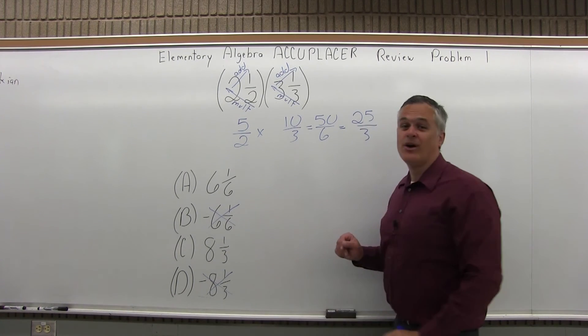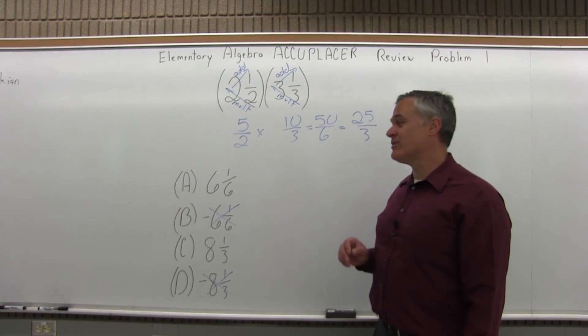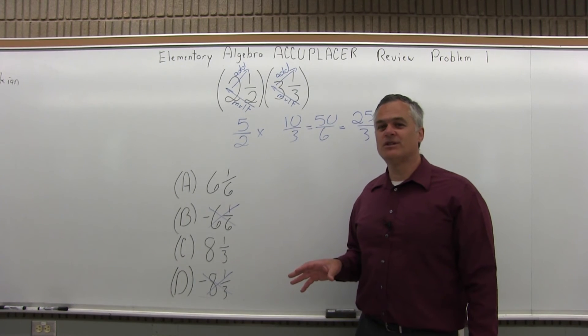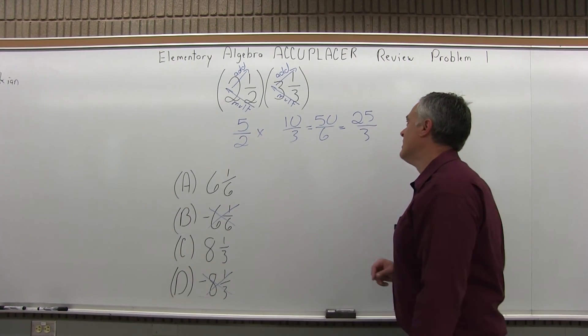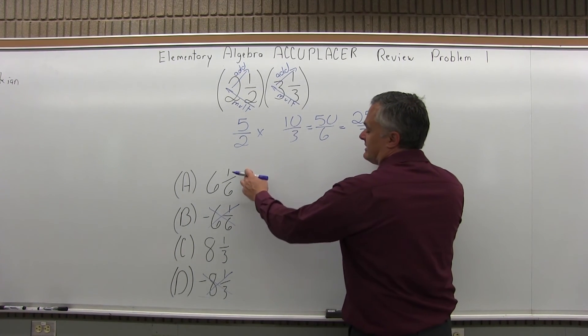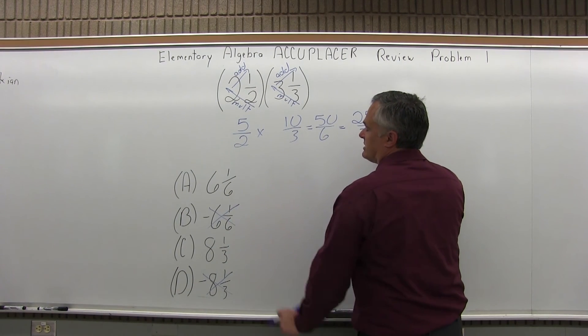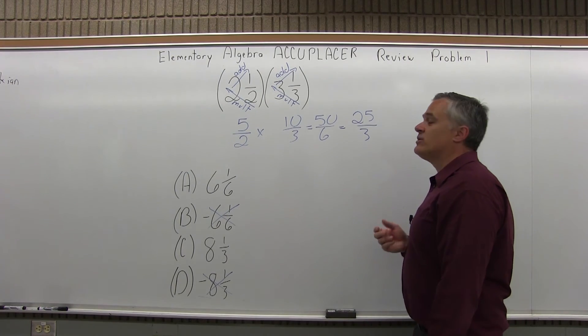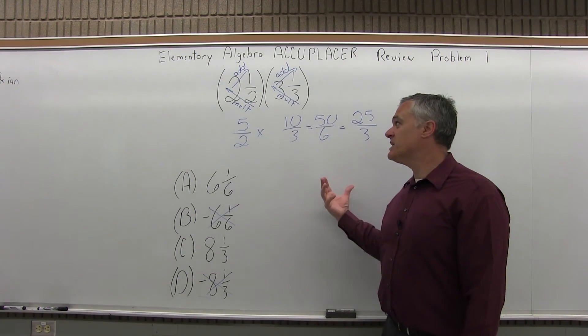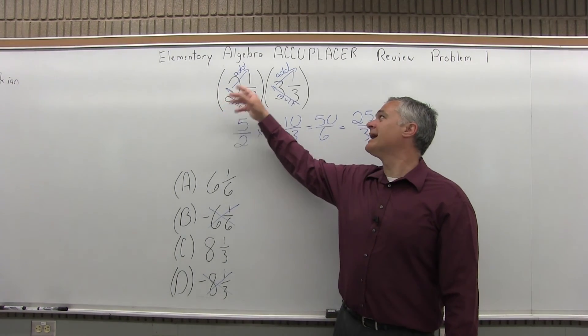Now it's starting to look like option C, which has a denominator of 3. That's why it's good to finish it to the end and not just jump at an answer. Now the 25 over 3 still doesn't match either of my available options, A, which is 6⅙, and C, which is 8⅓. So what I want to do is put this back into its mixed number form with a number in front and a fraction.